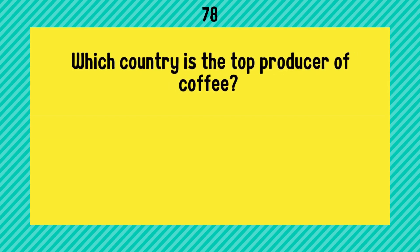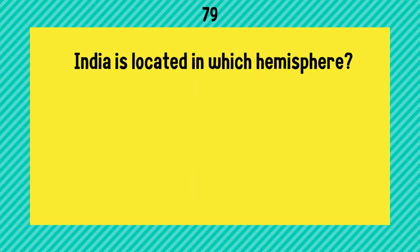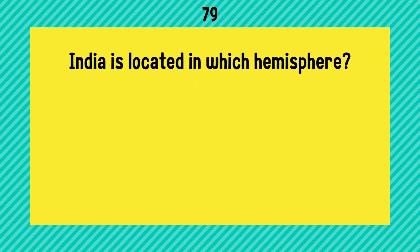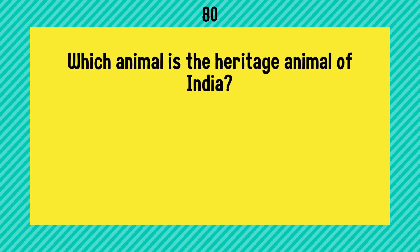Which country is the top producer of coffee? Answer is Brazil. India is located in which hemisphere? Northern and eastern hemispheres.